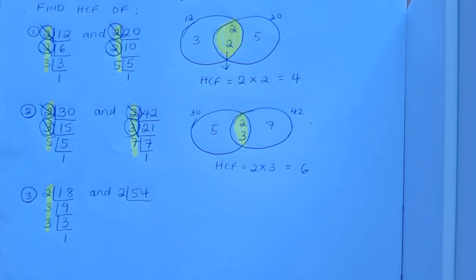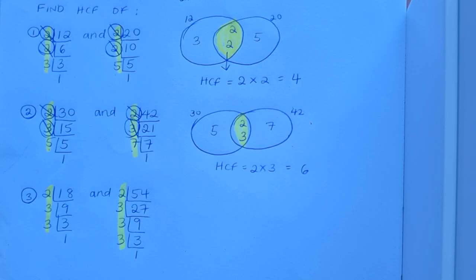So now I'm on to 54. 2 goes into 54 27 times. And 3 goes into 27 9 times. And 3 goes into 9 3 times. And 3 goes into 3 just the once. I get to 1 I'm done. There's my list of prime factors.